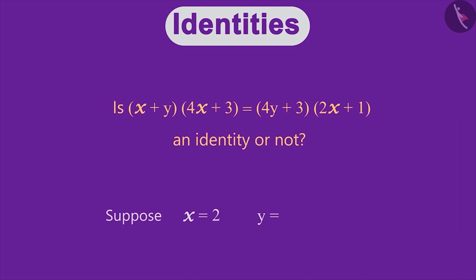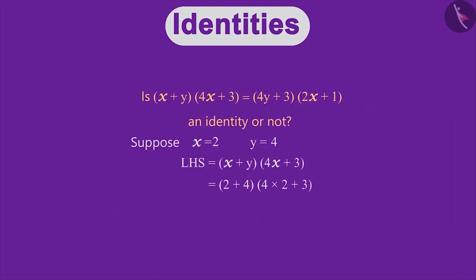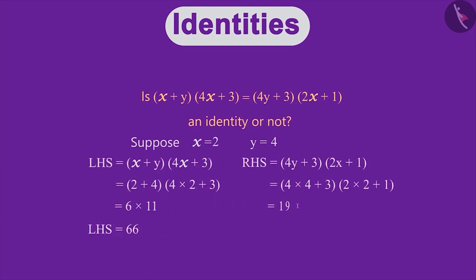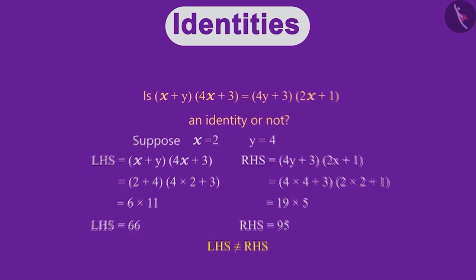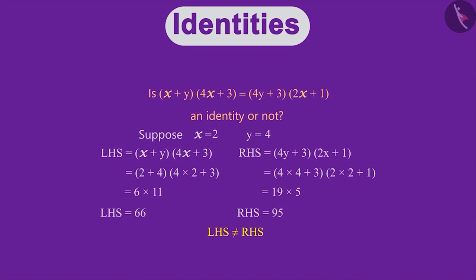Let us take x as 2 and y as 4. By doing this, LHS will be 6 × 11 which is equal to 66, while the RHS will be 19 × 5 which is equal to 95. We can see that the value of left hand side is not equal to right hand side.